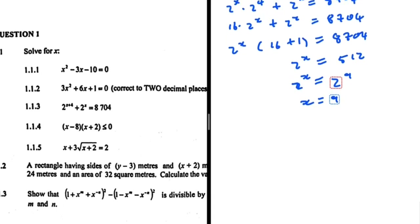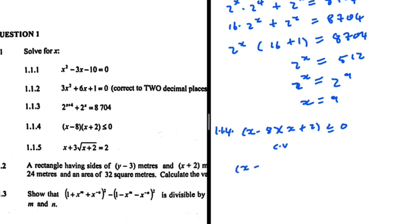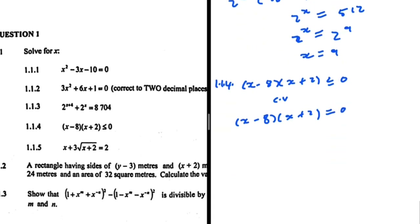Now 1.1.4: (x minus 8)(x plus 2) is less than or equal to 0. First I want to find my critical values, so I change the inequality sign to an equal sign. Clearly x equals 8 or x equals minus 2.